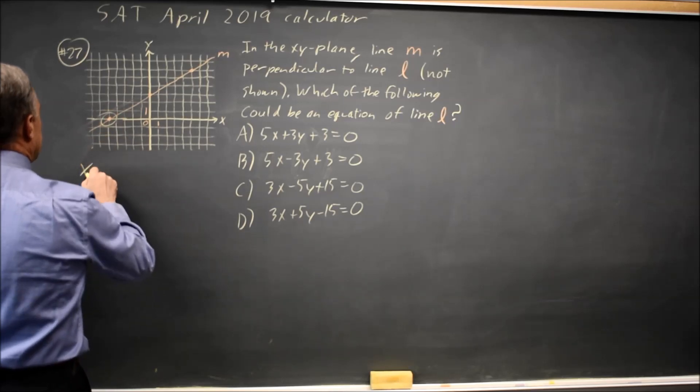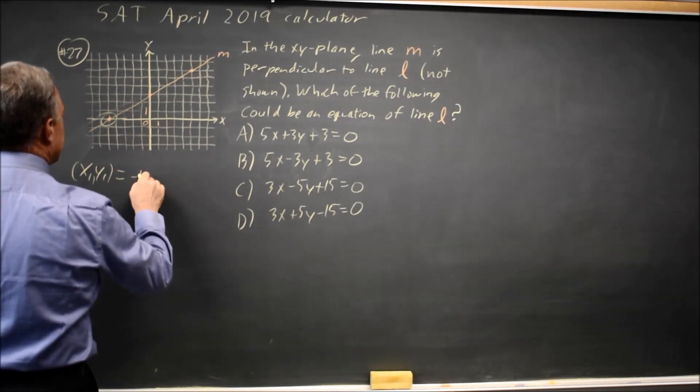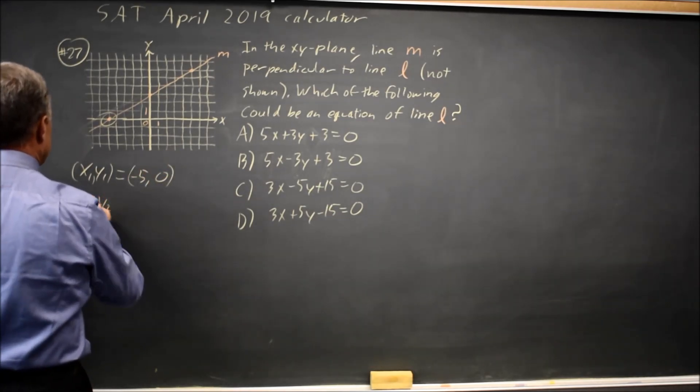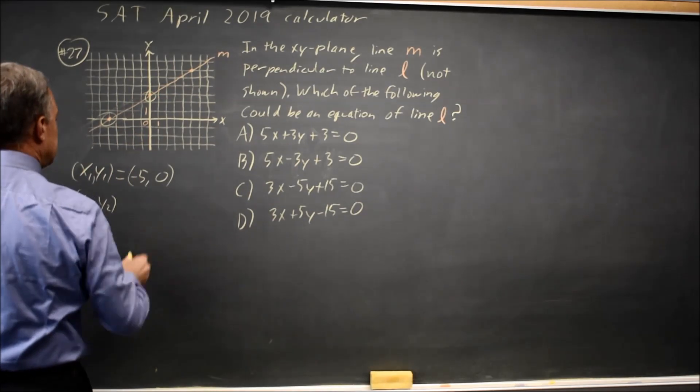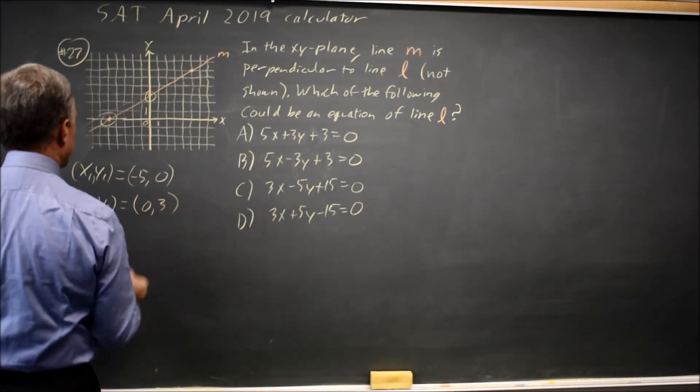I have this point here, x1, y1 equals x is negative 5 when y is 0, and x2, y2, this point is x is 0 when y is positive 3.